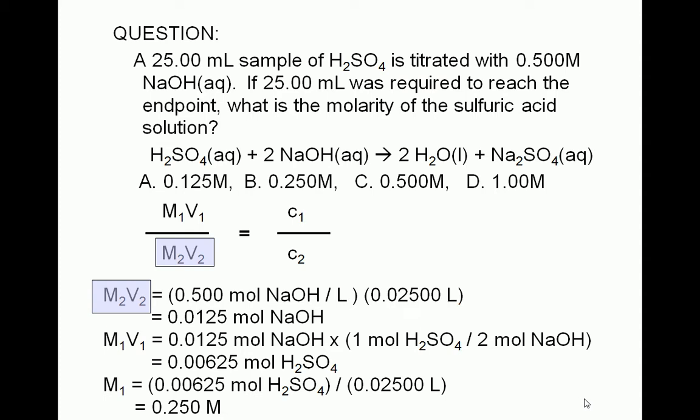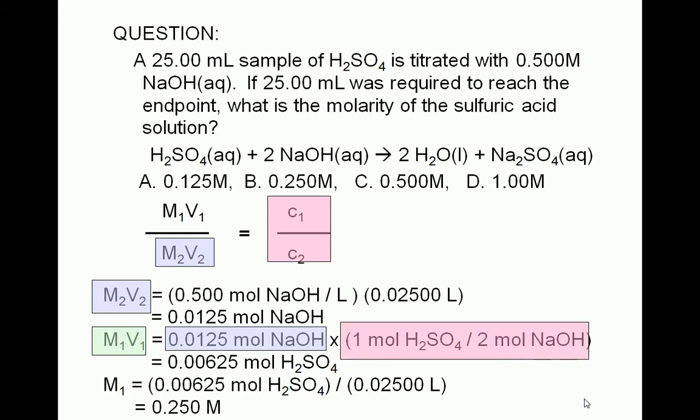Then to get the moles of sulfuric acid, M1V1, we multiply M2V2, which is 0.0125 moles of sodium hydroxide, by the ratio of the coefficients. The balanced equation tells us that 1 mole of sulfuric acid reacts with 2 moles of sodium hydroxide. This gives us 0.00625 moles of sulfuric acid.